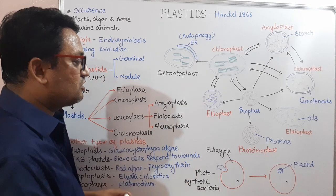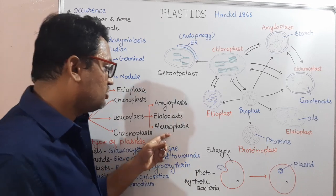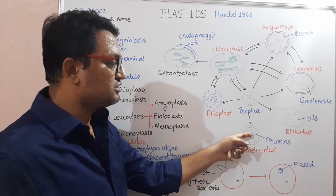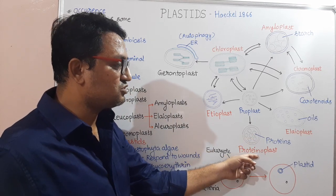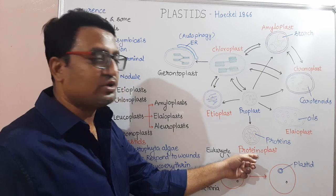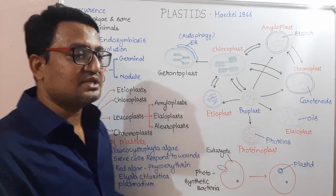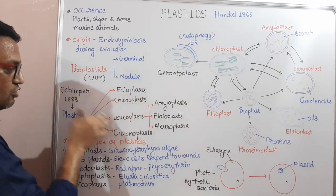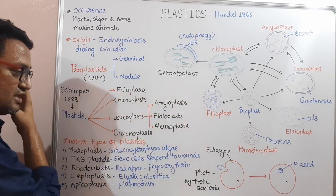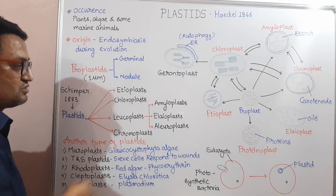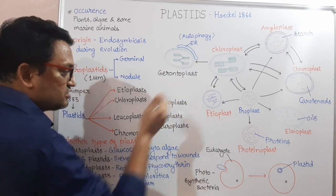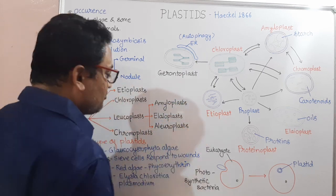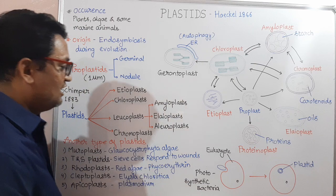The main function of Aleuroplasts is protein storage. As they store proteins, they are also called Proteinoplasts. So these are the three types of Leucoplasts — colorless Plastids: one for storage of starch, another for oil, and the last for protein.